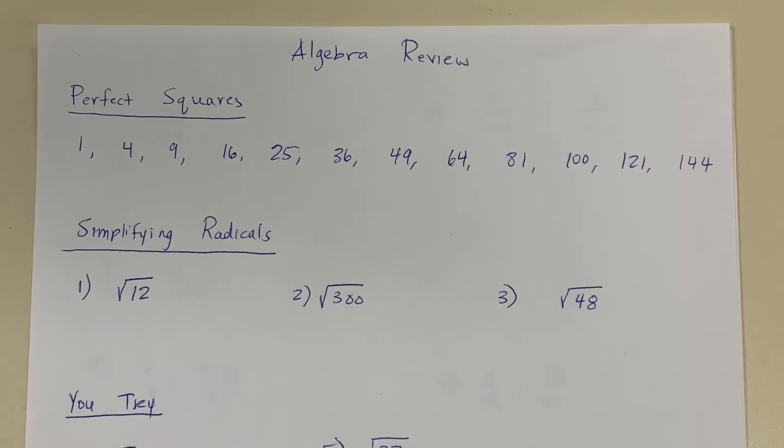For example, the square root of 9 is 3. The square root of 49 is 7.